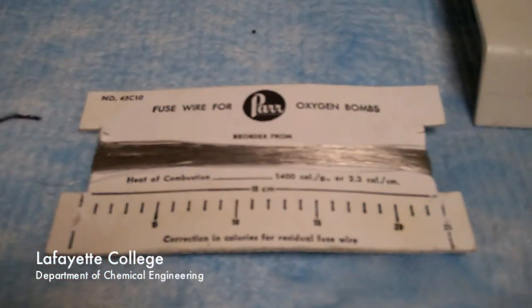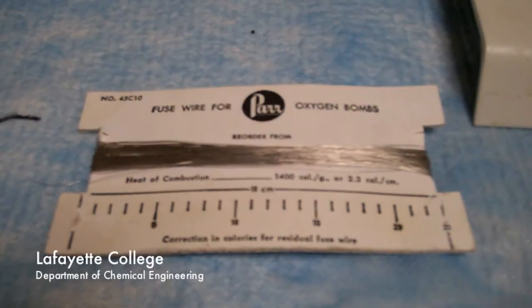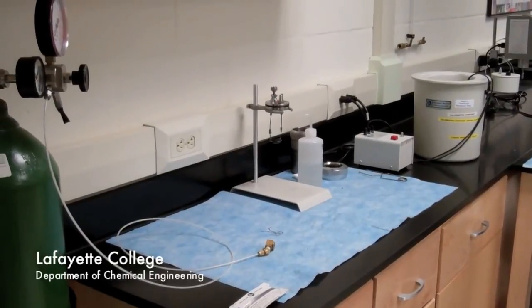This wire can be measured using a special scale and factored into the calculation for heat of combustion to account for the heat released by burning the wire. The experiment is complete and the bomb is ready for another run.